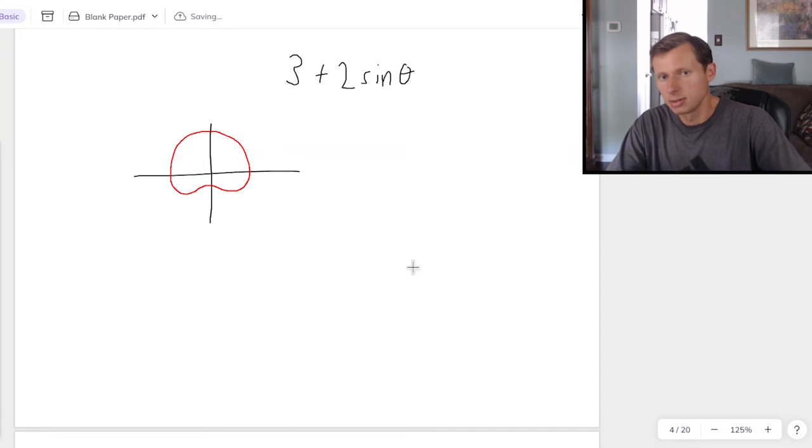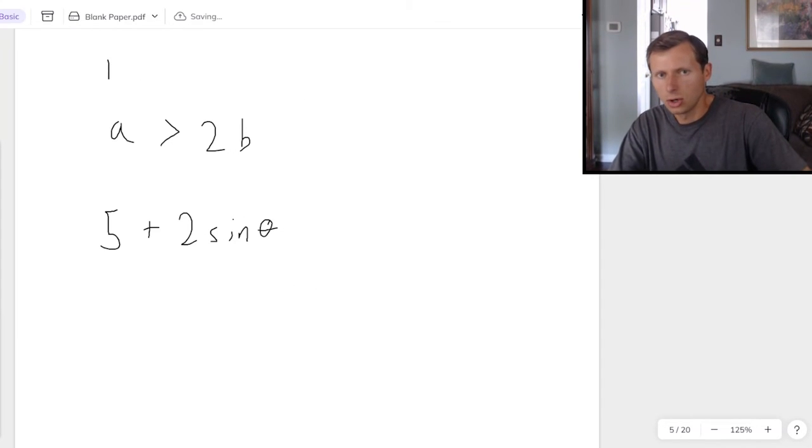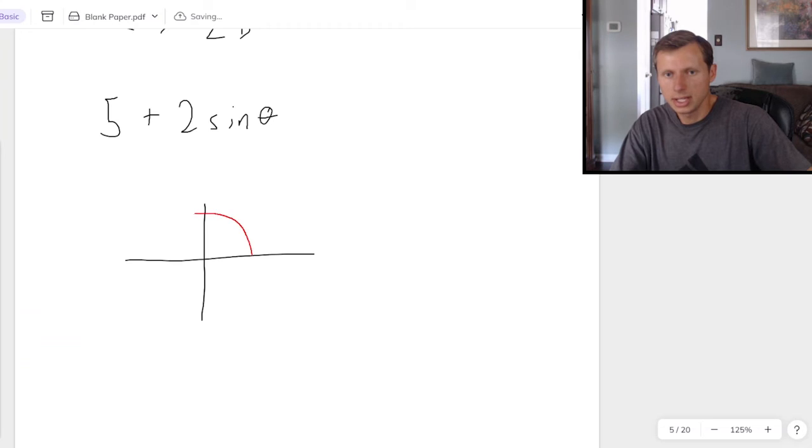You'll notice it's like the cardioid, because it dips in a little bit, but it never actually gets back to the origin, and for that reason we call it the dimpled limaçon. And then the last case we can have is when A is greater than 2B, so, for instance, 5 plus 2 sine theta from earlier. Now, as far as I know, this is still called a dimpled limaçon, but it doesn't look the same. Like, let me show you. It would look kind of like an oblique circle, or like an oval, where it never actually caves in, but it's definitely flatter on that side of the circle.